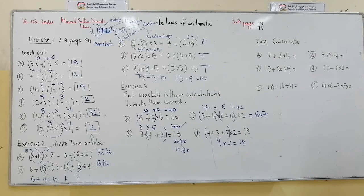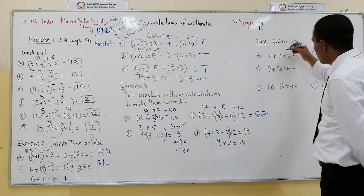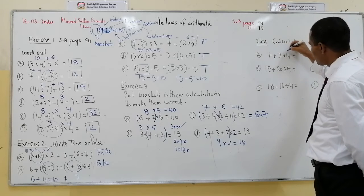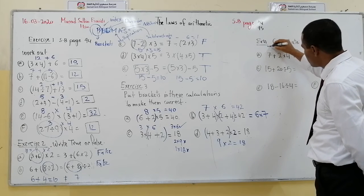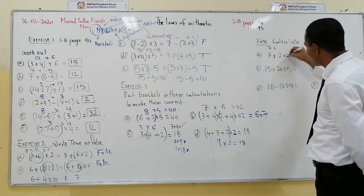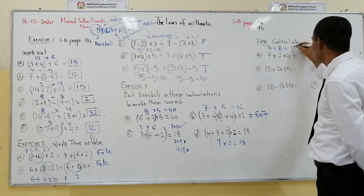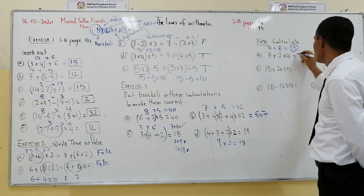Question number 4: calculate. Here we have 7 plus 2 multiplied by 4. I will calculate multiplication first: 2 by 4 is 8, then 7 plus 8 gives us 15. The answer is 15.